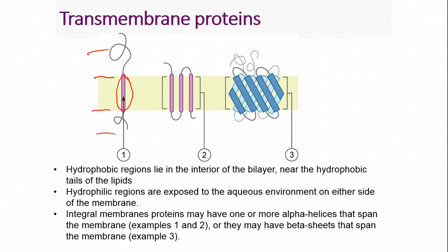Sometimes you have multiple regions passing in and out of a membrane. Here you can see three alpha helices — one, two, three — inside the membrane, connected by hydrophilic portions that are outside the membrane. You can also have beta sheets that span the membrane, as shown in this third protein.